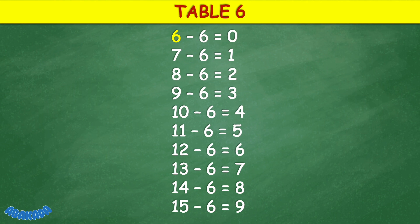Table 6: 6 minus 6 equals 0, 7 minus 6 equals 1, 8 minus 6 equals 2, 9 minus 6 equals 3, 10 minus 6 equals 4, 11 minus 6 equals 5, 12 minus 6 equals 6, 13 minus 6 equals 7.